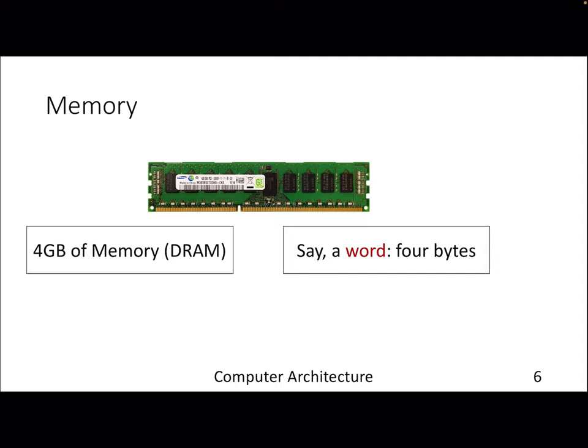At a high level, memory of capacity say 4 gigabytes is organized around something called a word, which is typically four bytes. For MIPS architecture, we assume one word is four bytes. Memory is nothing but a collection of words — word zero, word one, up to word N minus one, representing the entire 4 GB capacity. The processor sends requests through the bus, and the DRAM responds with the data.